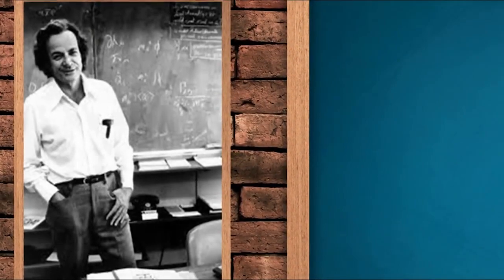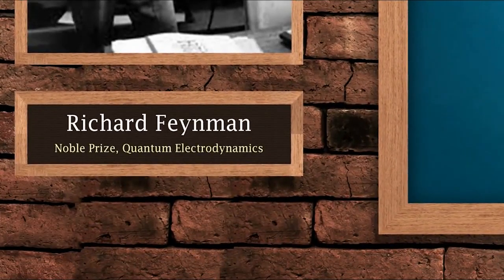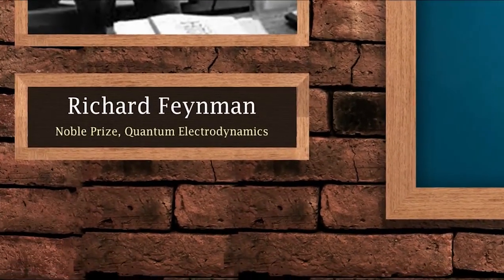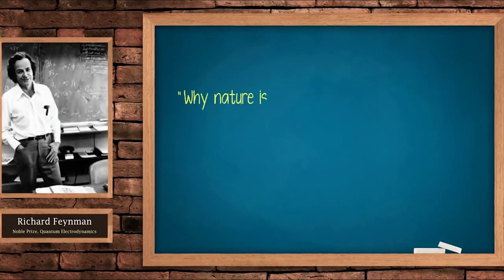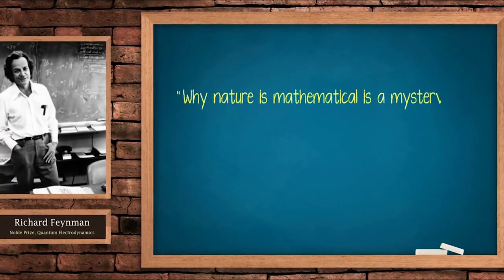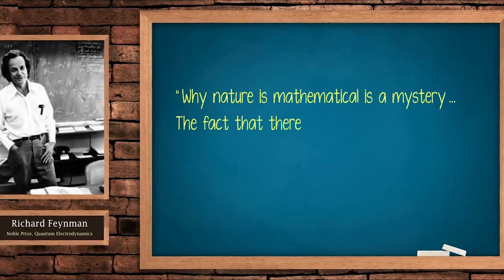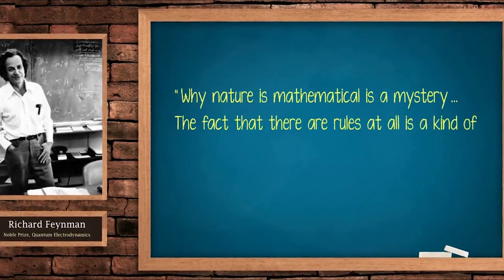Richard Feynman, a Nobel Prize winner for quantum electrodynamics, said: Why nature is mathematical is a mystery. The fact that there are rules at all is a kind of miracle.